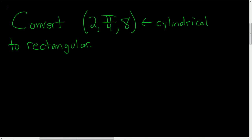In this video, we're being asked to convert this cylindrical coordinate into rectangular form. The cylindrical coordinates are of the form (r, θ, z). Now all we have to do is find x, y, and z.